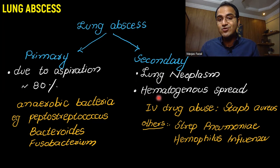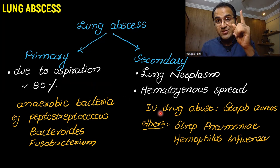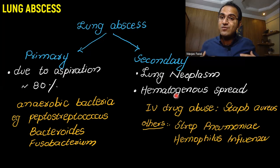Hematogenic spread of bacteria can also cause lung abscess. In IV drug users, Staph aureus can enter the blood and reside in the lungs, resulting in lung abscess formation. Abscess due to aspiration will be mostly unilateral and on the right side, while abscess due to hematogenic spread will be multifocal and bilateral.